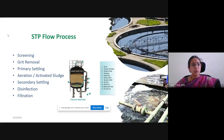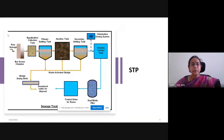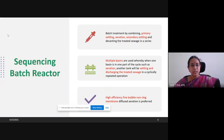It starts with screening, then moves to grit removal, primary settling, aeration or activated sludge treatment, then secondary settling, disinfection, and filtration. So this is a typical flow chart, and I'd like to brief about this flow chart.